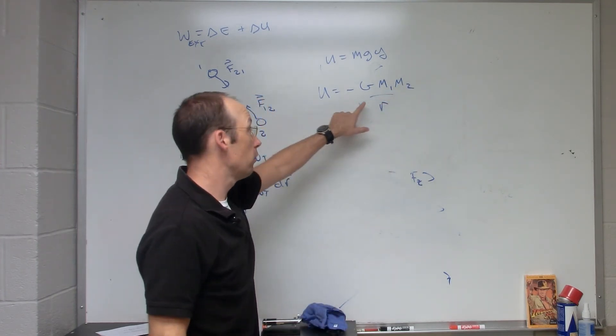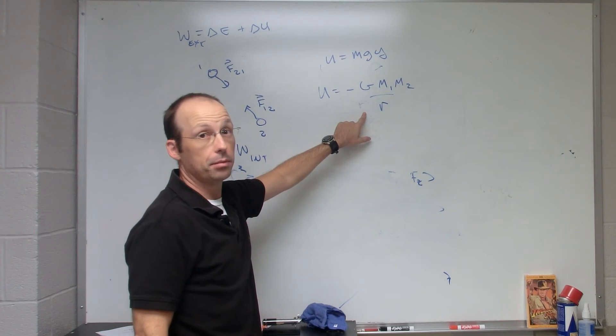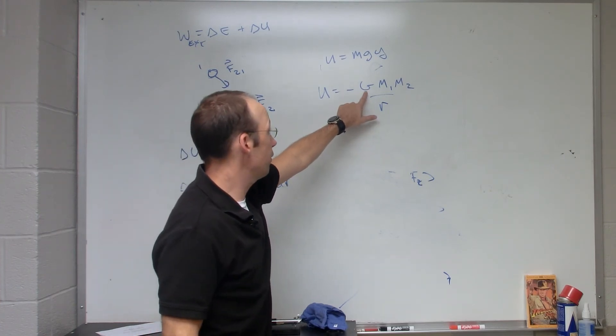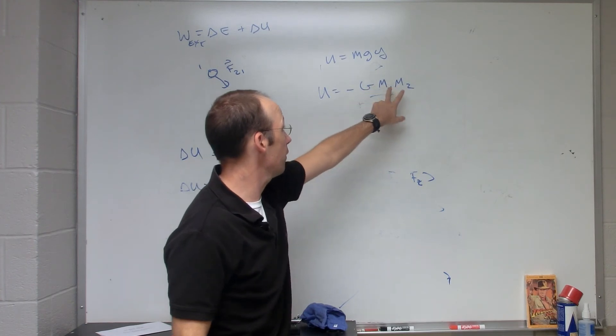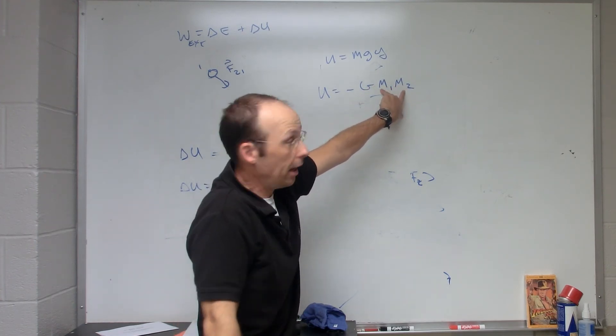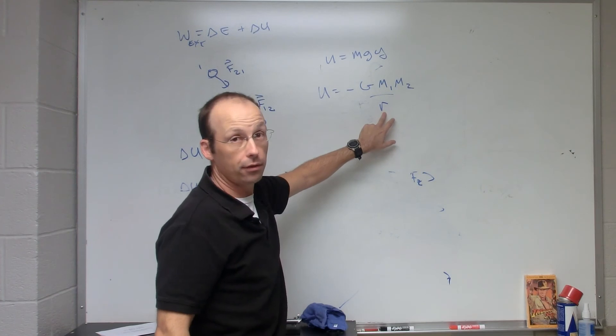This is a scalar and it looks a lot like the gravitational force but it's not. G is the same gravitational constant, 6.67 times 10 to negative 11. These are the two masses of the objects interacting and this is the distance between their centers.